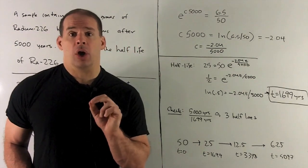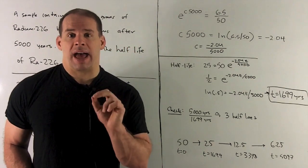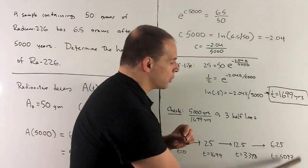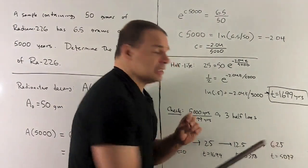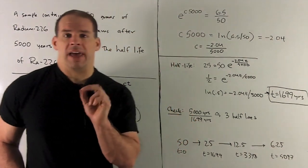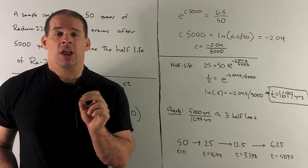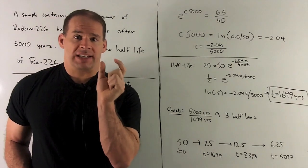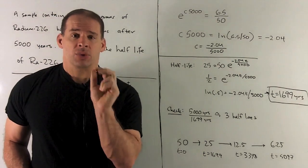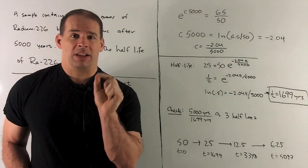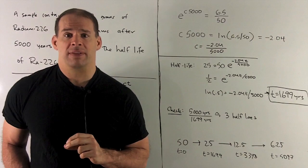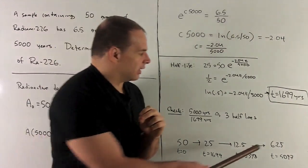You'll note it's a little bit less because we overshot t equal to 5,000 years — that's 100 extra years for this thing to decay. So we expect this to be a little bit less than our 6.5, and we see that it is.